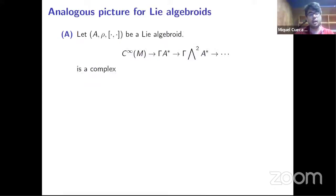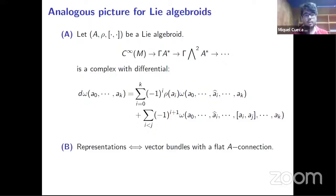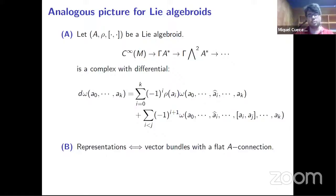This is an analogous picture of what happens for Lie algebroids. If you have a Lie algebroid, it is well known that the sections of the exterior power of the dual vector bundle form a differential complex, with a differential satisfying a Cartan-like formula, where you use the anchor and the bracket of the Lie algebroid. It is also well known that representations of a Lie algebroid are in one-to-one correspondence with vector bundles with flat connections.